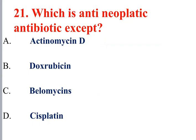Question 21: Which of the following is an anti-neoplastic antibiotic? Anti-neoplastic antibiotics include actinomycin, doxorubicin, and bleomycin. Cisplatin is a platinum compound and not an antibiotic, so options A, B, and C are the anti-neoplastic antibiotics.